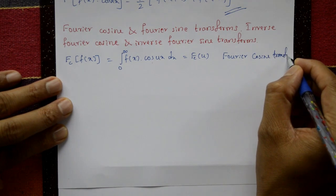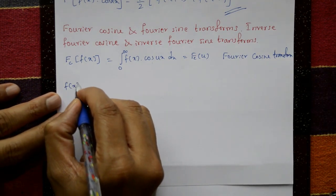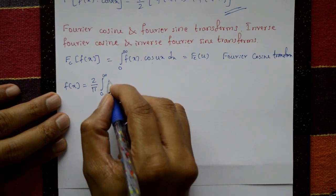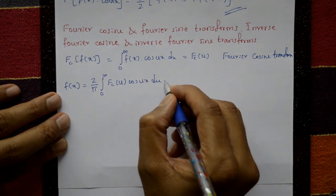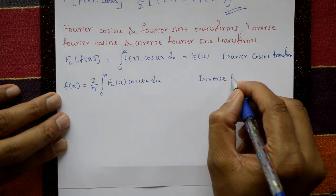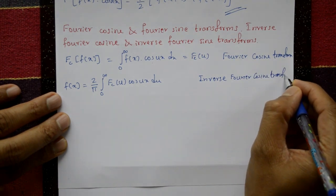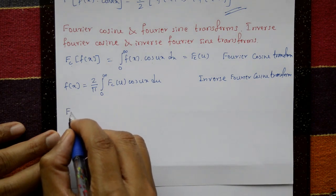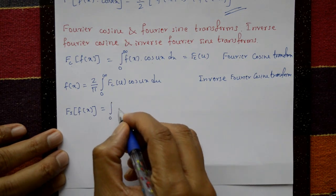The inverse Fourier cosine transform is f(x) = (2/π) integration from 0 to infinity of Fc(u) cos(ux) du. Here 'c' denotes cosine.